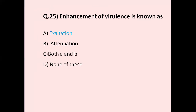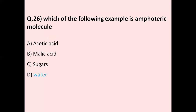Question number 25 covers enhancement of virulence. Question number 26: Which of the following is an example of an amphoteric molecule? Option A acetic acid, option B malic acid, option C sugar, option D water. The correct answer is water. Water is a common example of an amphoteric substance. Enhancement of virulence — option A exaltation, option B attenuation. Attenuation means the reduction of virulence. The correct answer for enhancement of virulence is exaltation.